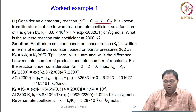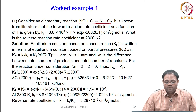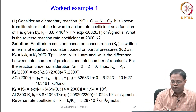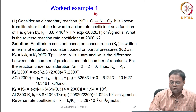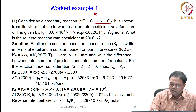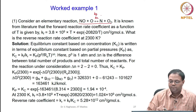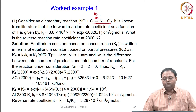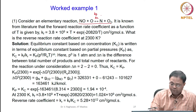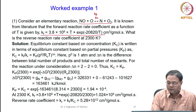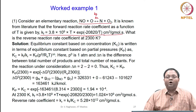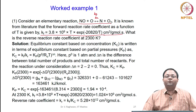It is known from literature that the forward reaction rate coefficient as a function of temperature is given. The forward reaction coefficient is KF and the reverse reaction coefficient is Kr. From literature we have the expression to calculate the forward reaction coefficient KF.